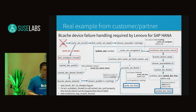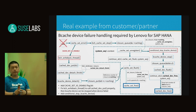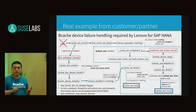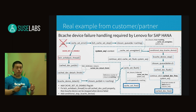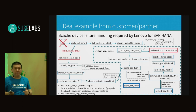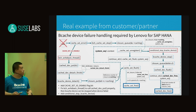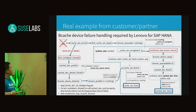They required us to provide a method to detect whether the device is gone and implement a conditional stop of the bcache device. If the SSD fails but the data on SSD is clean, we can continue to make the bcache device work just ignoring the cache device — performance will be bad but data is still accessible. If the cache is dirty and the cache is gone, we need to immediately stop the bcache device to prevent further writes from corrupting data.